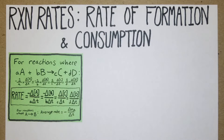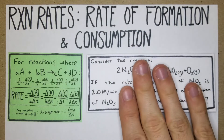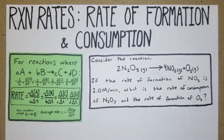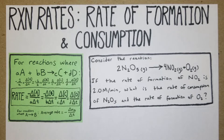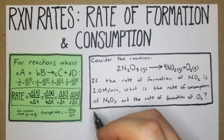Here's our first problem: consider the reaction 2N₂O₅ yields 4NO₂ plus O₂. If the rate of formation of NO₂ is 2.0 moles per minute, what is the rate of consumption of N₂O₅ and the rate of formation of O₂? The best way to start is to put it into the formula.